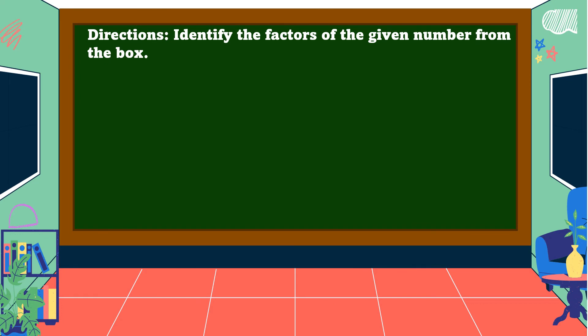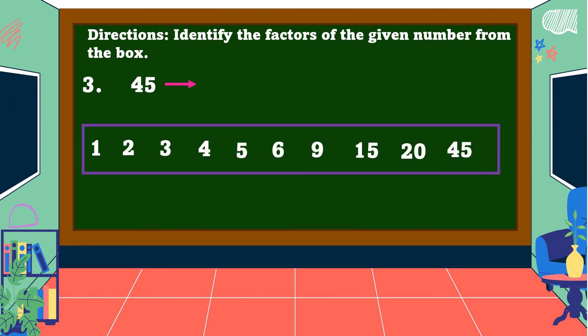Our last example. Number 3: 45. So, what are the factors of 45? Yes, we have... all right. The factors of 45 are 1, 3, 5, 9, 15, and 45.